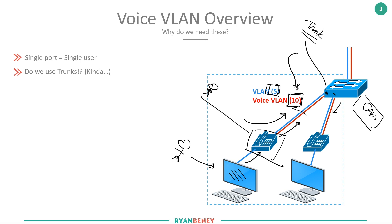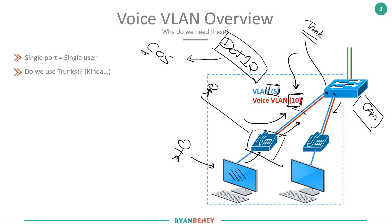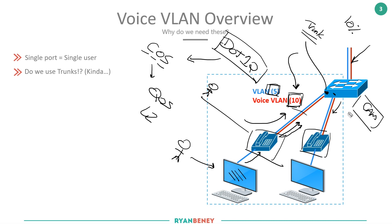By tagging the voice VLAN traffic with dot1Q, you get a dot1Q header, and inside that header there are extra bits that can be used for something called Class of Service — which is quality of service at Layer 2. As this traffic is sent in VLAN 10 upstream and hits the switch, the switch can ensure, for example, that a certain portion of the upstream trunk bandwidth is reserved for the telephones, ensuring they always get the best quality and reserved bandwidth throughout the network.